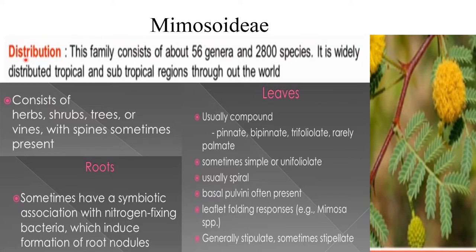Mimosoideae. Distribution: this subfamily consists of 56 genera and 2,800 species. It is widely distributed in tropical and subtropical regions throughout the world. Habit: it consists of herbs, trees, and few climbers. Coming to the roots: usually these roots have a symbiotic association with nitrogen-fixing bacteria, which induces the formation of root nodules. Leaves are bipinnately, rarely pinnately, compound. Stipules are modified into spines.